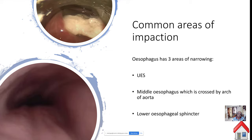This question is commonly asked in exams — what are the common areas where foreign body can be impacted in the esophagus? If they ask about the oropharynx, you can include the pyriform fossa and cricopharynx. If they ask only about the esophagus, start from the cricopharynx (upper esophageal sphincter), then the middle esophagus narrowed by the arch of the aorta, and third the lower esophageal sphincter.